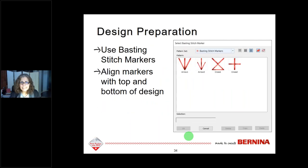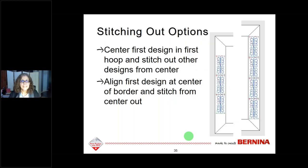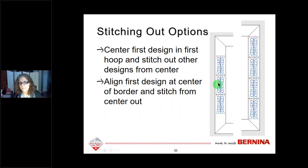We're going to use basting stitch markers to help us align different designs. When stitching a border quilt, you can't fit the whole border in one hooping. I'll teach you how to use basting stitch markers to get your designs aligned so you can re-hoop and align correctly. Usually it's best to start in the middle of the border and work out in one direction, then flip and go the other direction.